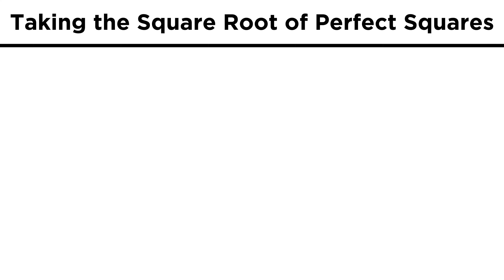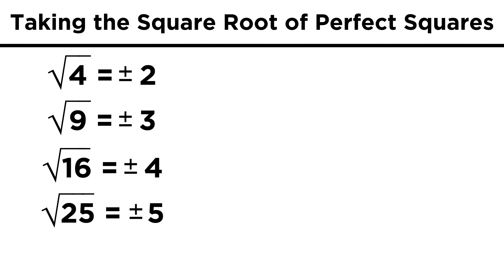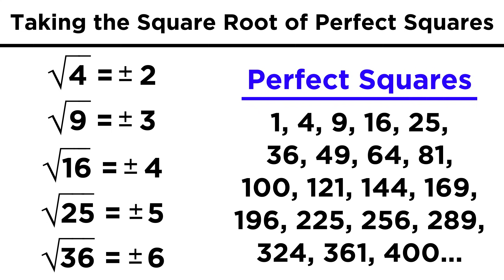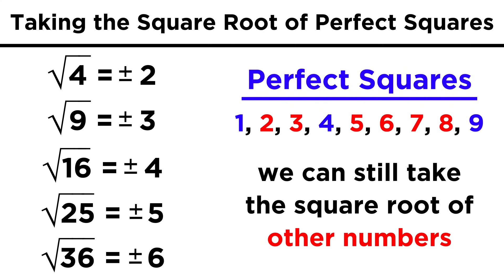It's very easy to get the square root of perfect squares. The square root of four is plus or minus two. Continuing down the list, nine, sixteen, twenty-five, thirty-six, all give very tidy answers when we take the square root. We should make some effort to memorize the first ten or even twenty perfect squares, because they will come in handy later. But the numbers in between these perfect squares also give a square root.